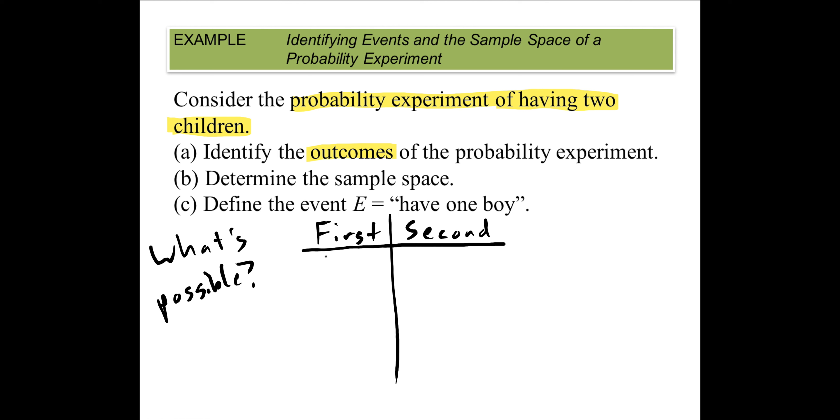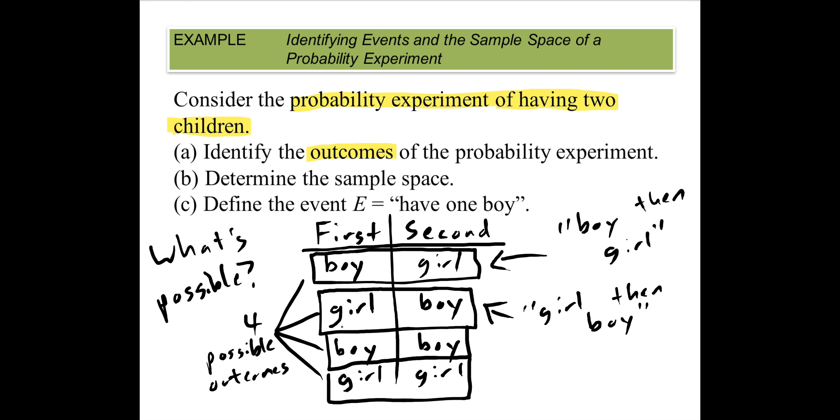For example, we could have a boy first and a girl second, and that would be one outcome. If we're dealing with probability, then the outcome where you have a girl first and then a boy second, that is a different outcome. That's the outcome of having a girl then a boy. So what else could happen? We could have both be boys and both be girls. And so this collection is the answer to part (a)—it's the outcomes, the possible ways that this probability experiment could play out.